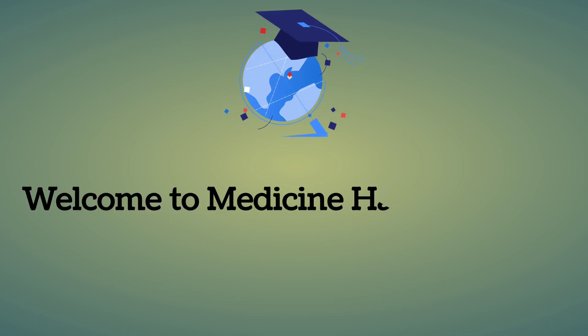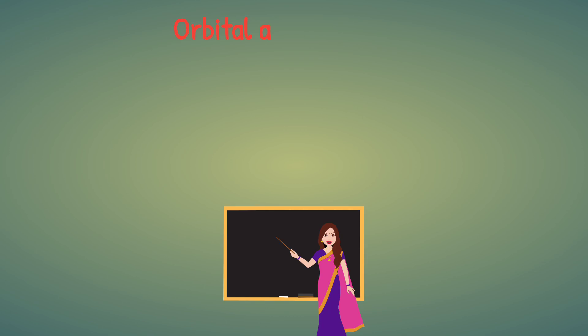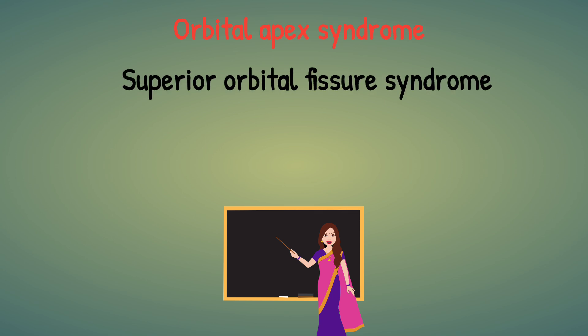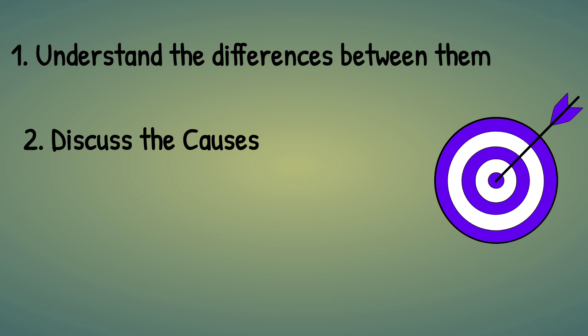Welcome to Medicine Handy Point. The topic is three syndromes: Orbital Apex syndrome, Superior Orbital Fissure syndrome, and Cavernous Sinus syndrome. These three syndromes have some similarities and some differences. The target of this video is to understand the differences between them, discuss their similarities, and briefly touch on the causes for these syndromes as well.